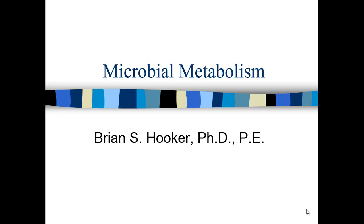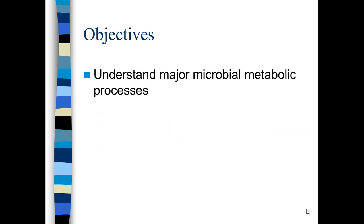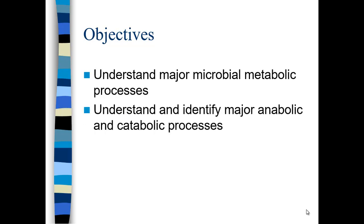We start out with this chapter. Our objectives are to understand the major microbial metabolic processes. We're going to look at several different processes that are important in terms of energetics and break down those processes. We'll look at both anabolic processes as well as catabolic processes. Anabolic basically means to build up molecules and make larger molecules. Catabolic processes are to break down molecules in order to create energy.